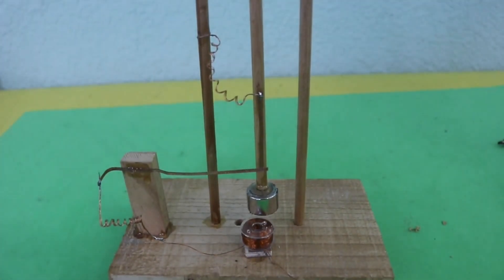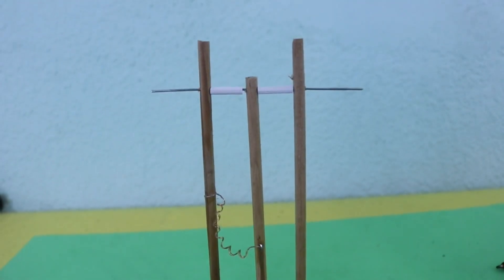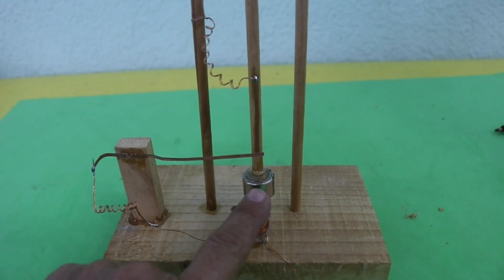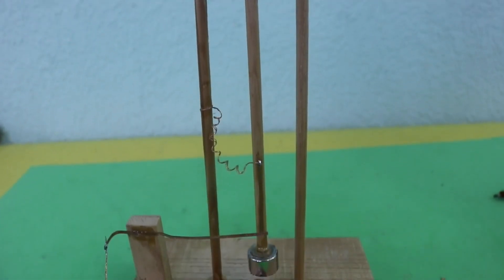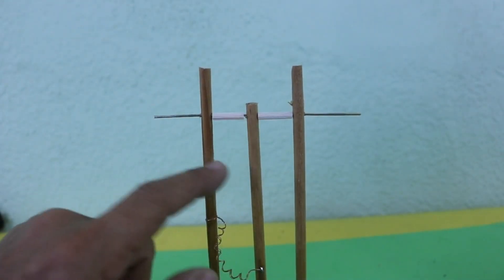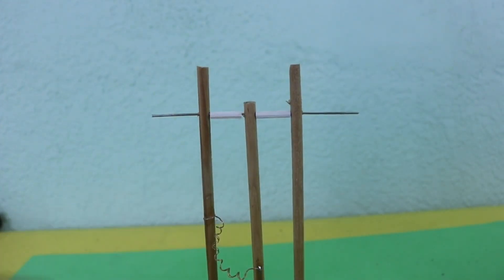As you can see, it's a simple pendulum. That is, we have a mass connected to a rod that can pivot here on this piece of wire.